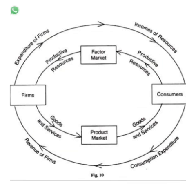In this picture, we can see the factor market and the product market. In the factor market, the factor services are supplied. The consumers render their factor services, which are used by the firms. The firms, using those services, produce goods and services and supply them to the product market. This is the link between consumers and firms.